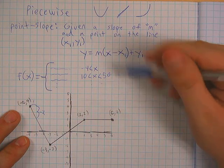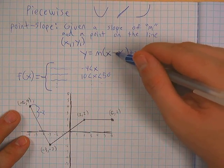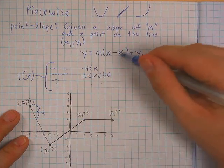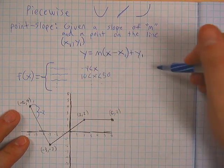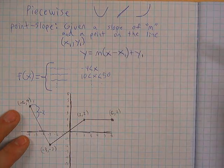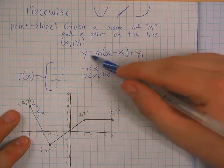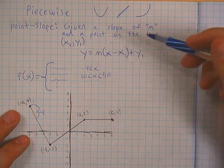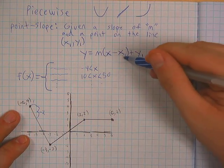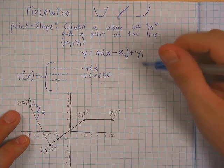...times our variable x minus the x-coordinate of our point, x-sub-1, plus the y-coordinate of our point, y-sub-1. This x and this y will never change — the only things that need to change in this equation are your slope, your x-sub-1, and your y-sub-1.